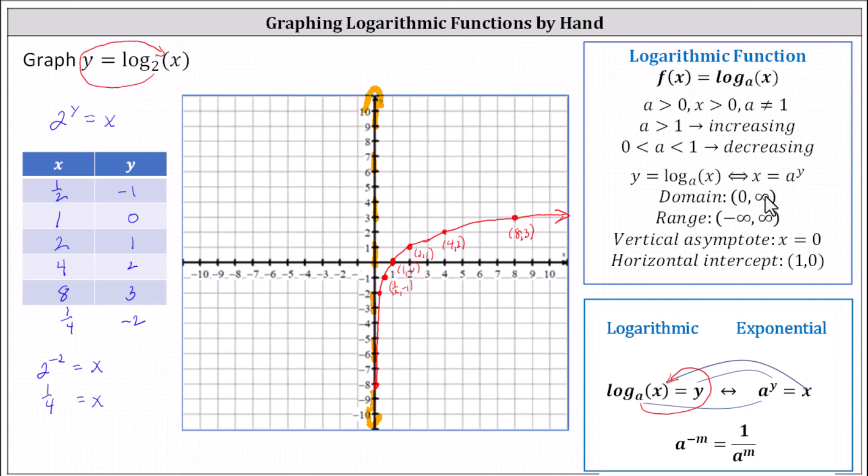The domain is the open interval from zero to infinity. The range is the open interval from negative infinity to positive infinity. The vertical asymptote is x equals zero, which again is the y-axis, and the horizontal intercept is one comma zero, which our graph verifies. We can see that point here. I hope you found this helpful.